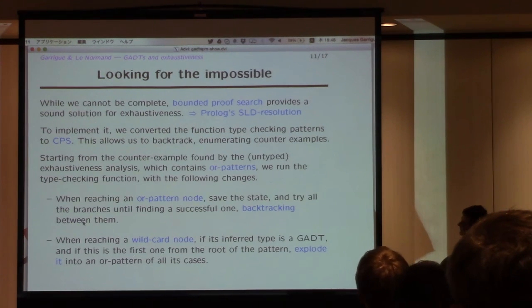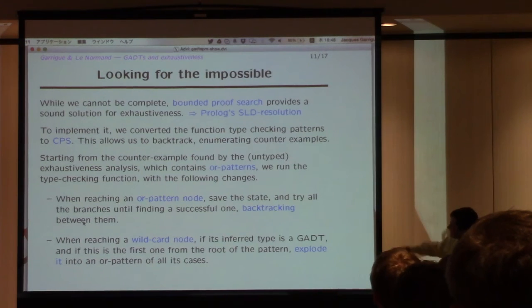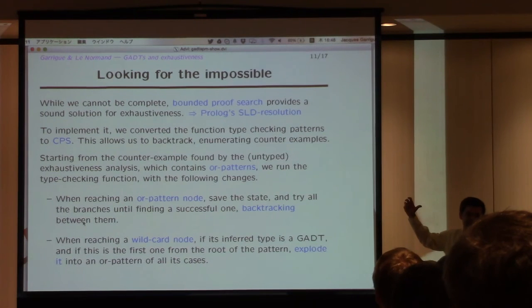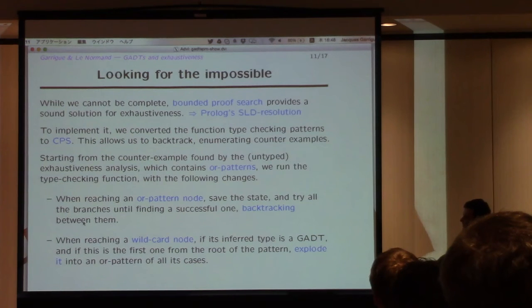So the idea, the basic idea here is if I have something for what is a counterexample? I'm using, I'm doing the exhaustiveness check. Not special cases. Then I get a list of counterexamples that I can pack them all together as a big or pattern. There might be more efficient ways. And then I'm going to run the type checking function, but it's a backtracking function. When it meets another pattern, it saves the state, and it tries all the branches until you find a successful one. And it backtracks before trying the next one.